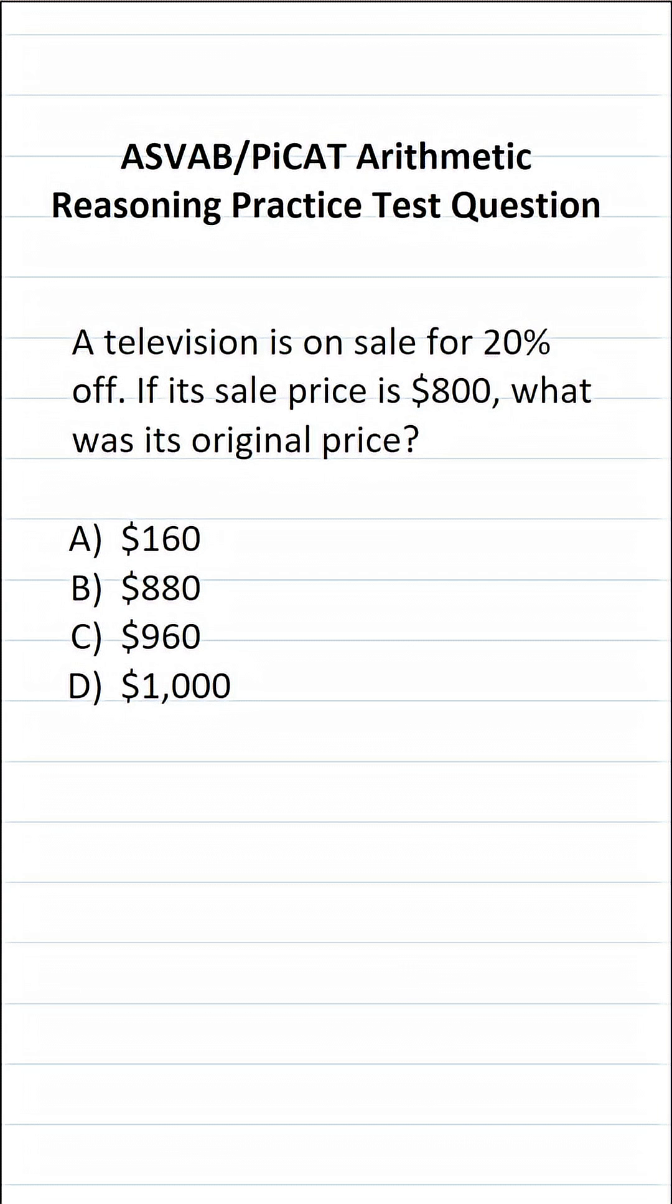So in order to calculate its original price, we can use the sales price formula. Sales price SP is always going to be equal to the original price minus the original price times the discount amount.